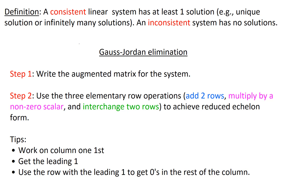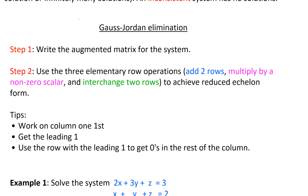Some tips here: you want to work on column one first. I recommend getting the leading one in that column first, and then use the row with the leading one to get zeros in the rest of the column. Let me show you an example of what I mean.